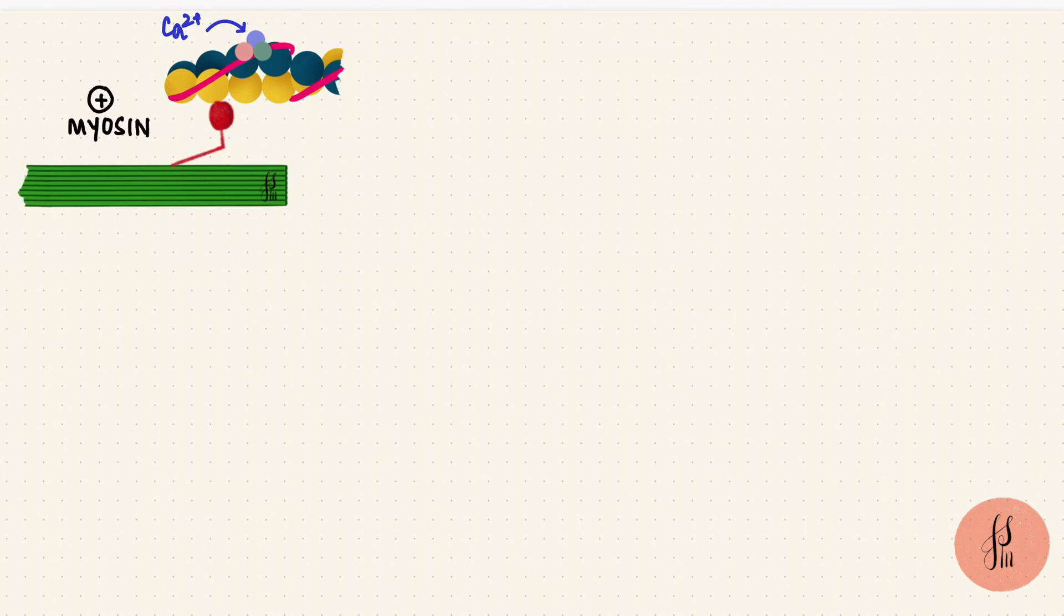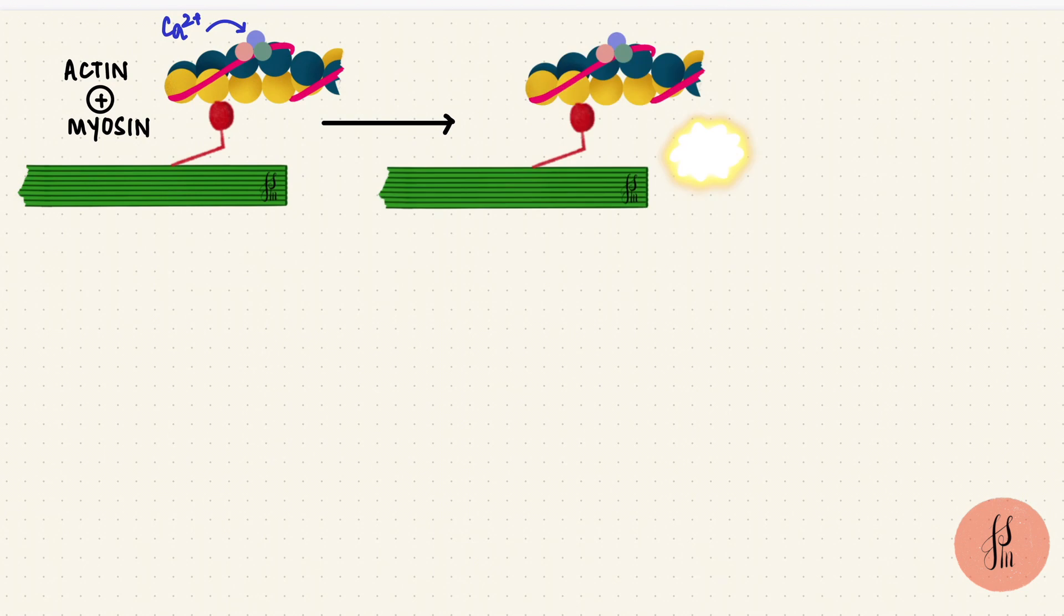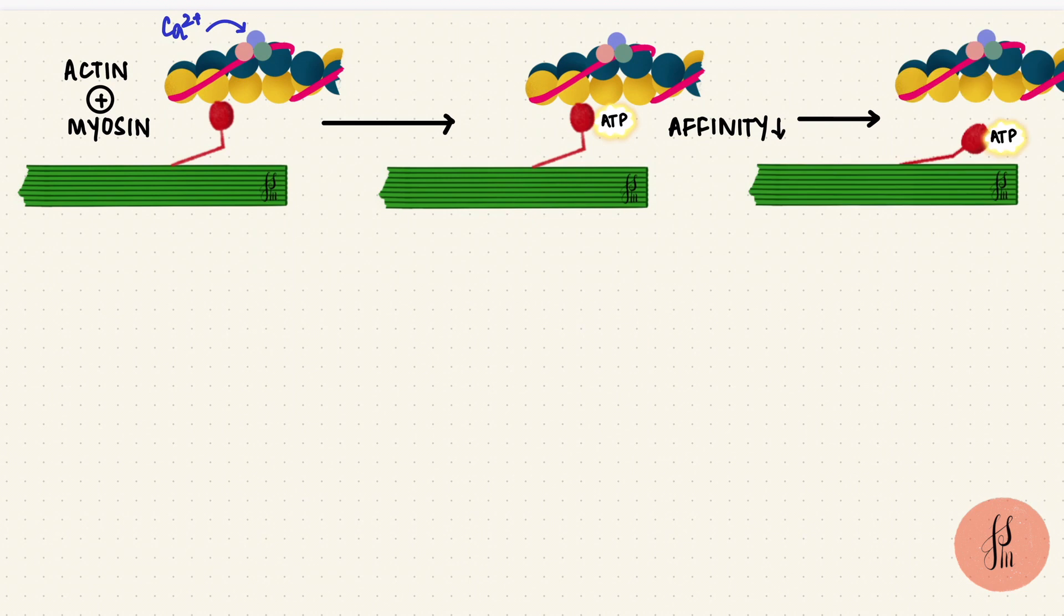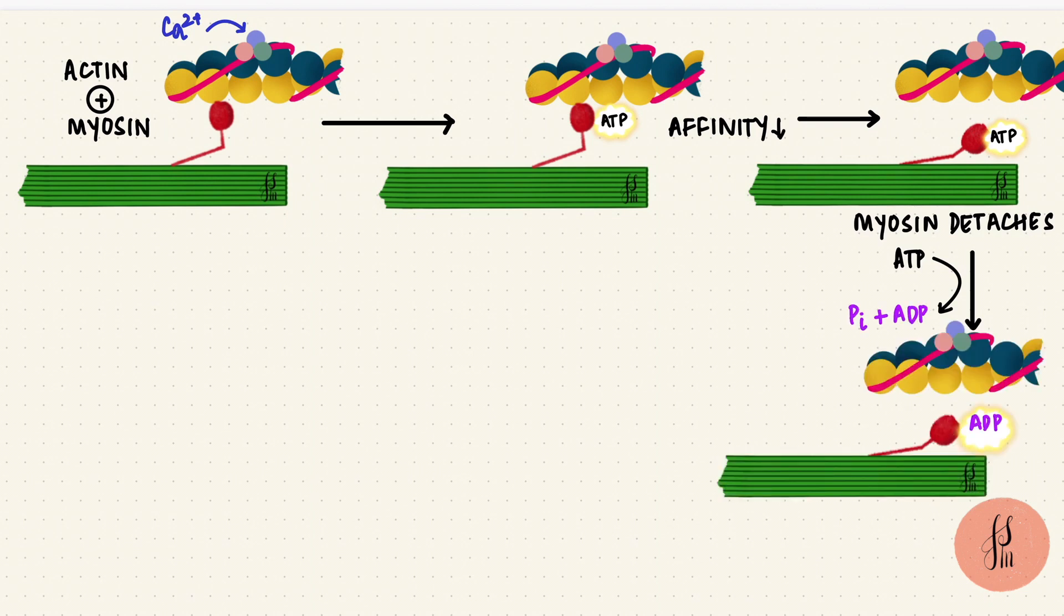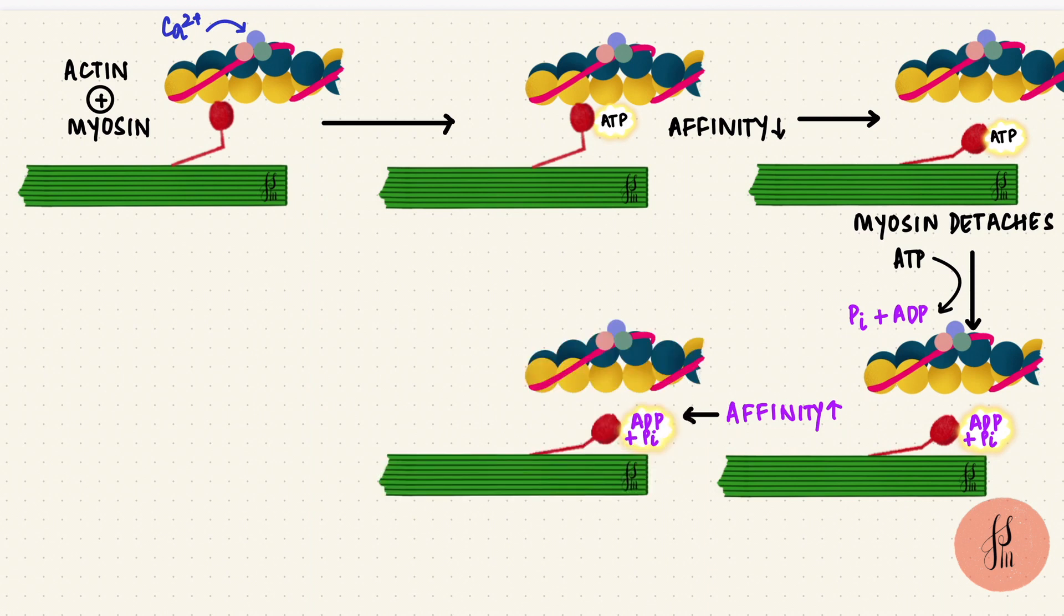The head of myosin has an actin binding site. So let's start from when the myosin head is bound to actin. The myosin head also has an ATP binding site. When ATP binds, the affinity of myosin for actin comes down, so it detaches. By the ATPase enzyme, it gets broken down to ADP and an inorganic phosphate. They remain bound to the myosin head. ADP, that's adenosine diphosphate, increases the affinity of myosin for actin. So it extends and attaches to another monomer on the actin filament.